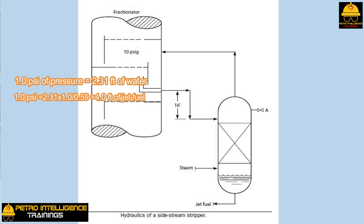The pressure head of the column of unstripped jet fuel 16 feet high is 16 feet divided by 4 feet per psi, equal to 4 psi. This means there was a 4 psi pressure head driving force available to overcome the 3 psi pressure drop of the stripper's overhead vapor line. This was sufficient for the jet fuel to flow out of the fractionator and into the stripper. However, raising the steam flow to the stripper increased the pressure drop in the overhead vapor line from 3 to 5 psi. The pressure at point A then increased from 13 to 15 psig, and the 4 psi pressure head driving force was no longer sufficient to overcome the 5 psi pressure drop.